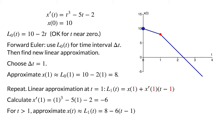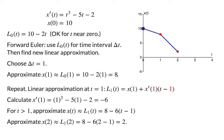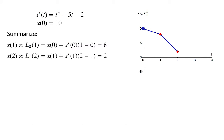When we graph this second linear approximation, we see how the estimate of x of t decreases more steeply. Since we are using time intervals of length delta t equals 1, we'll use this linear approximation for a step of that length and estimate the value of x of t at t equals 2. The linear approximation yields x of 2 equals 2, which we plot on the graph with another red point. To summarize our results so far with delta t equals 1, we use the linear approximation at t equals 0 to estimate that x of 1 is 8, then use the linear approximation at t equals 1 to estimate that x of 2 is 2. Let's continue this process for two more time steps to estimate x of t at t equals 3 and t equals 4.